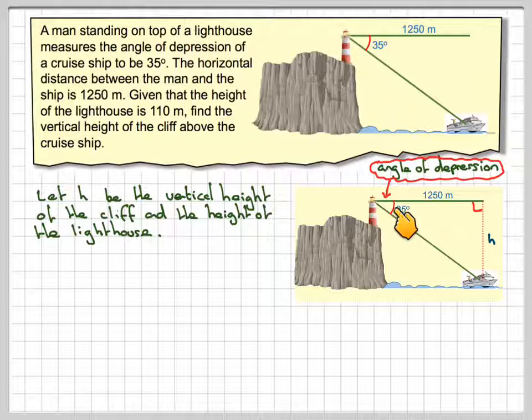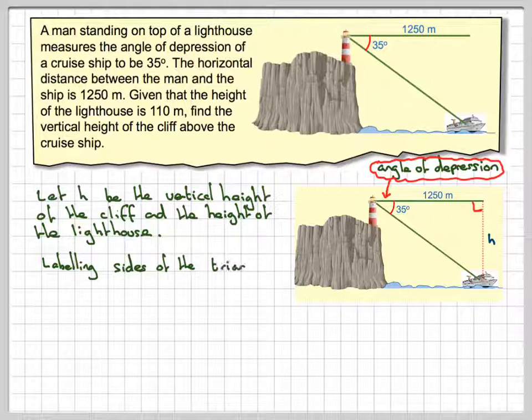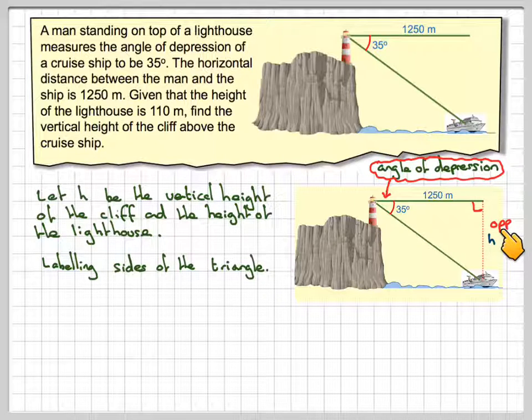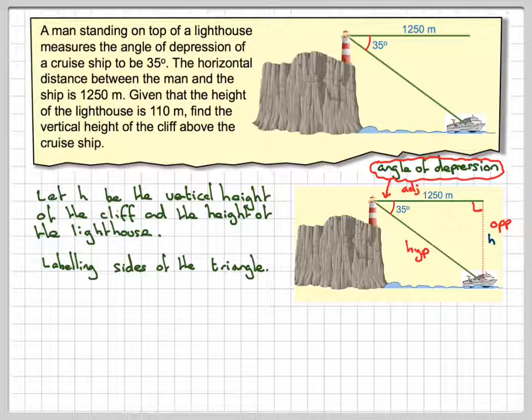This here is called the angle of depression because you're looking downwards to a horizontal. And labelling the sides of this right-angled triangle, this side will be the opposite, because it's opposite 35. This angle here will be the adjacent, and this one here is the hypotenuse.